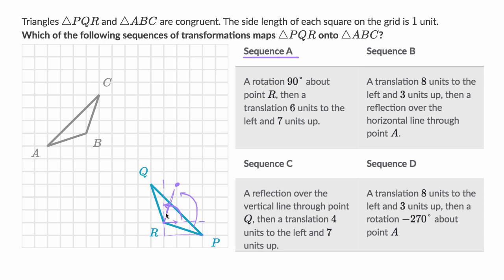So that side will look like this — that is P. And then Q is going to go right over here, also doing a 90 degree rotation about R. So after you do the 90 degree rotation, PQR is going to look like this — that is Q. So we've done that first part. Then a translation six units to the left and seven units up. So each of these points are going to go six units to the left and seven up.